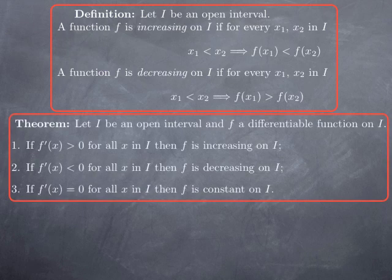In the case of a differentiable function we do have such a simple criterion. Namely, if the derivative of the function is positive on the interval, then the function is increasing on the interval. If the derivative is negative on the interval, then the function is decreasing on the interval. And if the derivative is identically zero on the interval, then the function is constant on the interval. This last point is a converse of the observation that if you have a constant function then the derivative is zero — here we see that if the derivative is zero, then the function is constant.